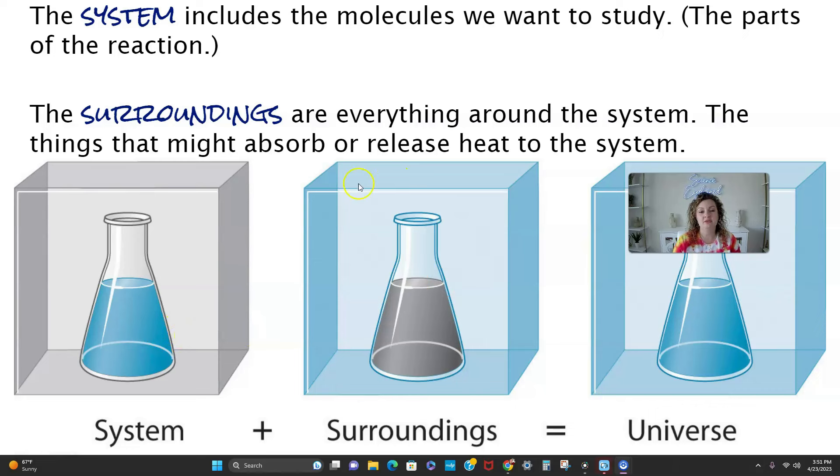The surroundings, as you see in this blue part, is going to be everything else around the system. So this is what can absorb heat from the system, or it can be releasing heat to the system, either way. And then everything together, we call that the universe.